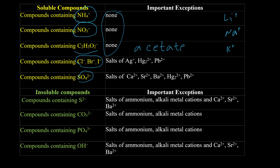For example, sulfate is always soluble except for calcium, strontium, barium, mercury(I), and lead(II). So whenever we have an ionic compound, we should double-check with the solubility chart to make sure if our compound is soluble or not.